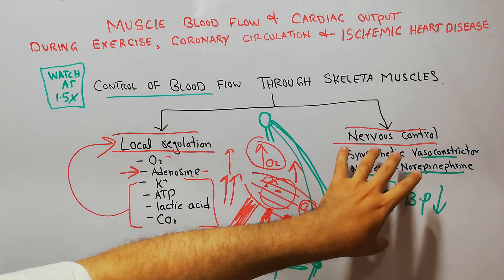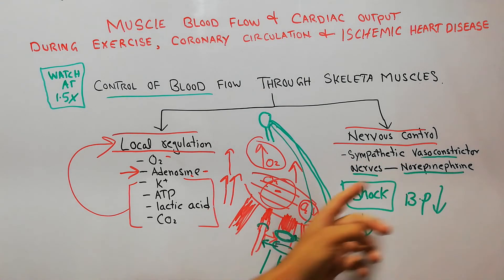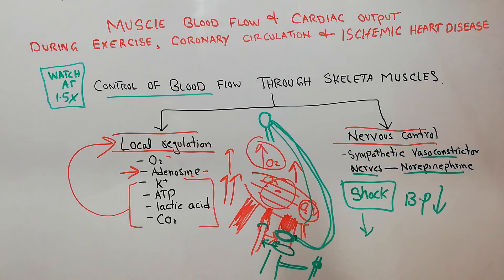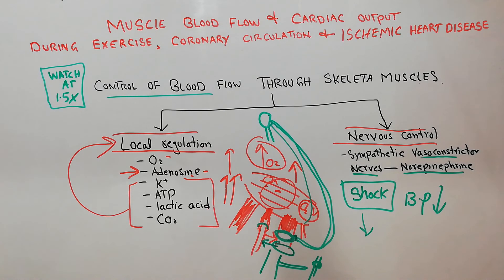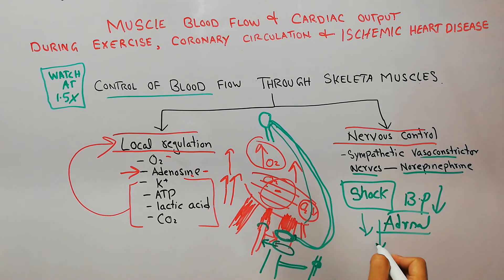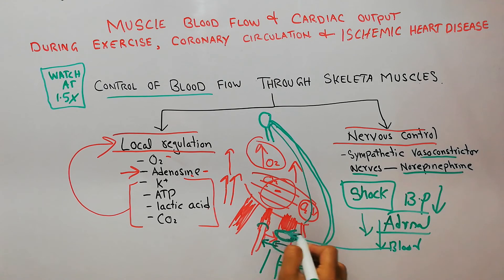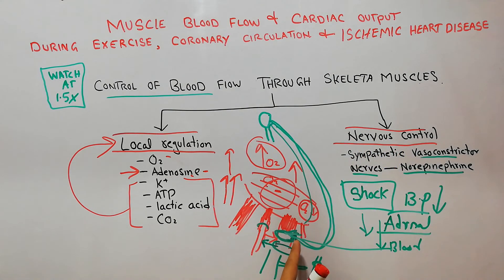The nervous control of blood flow through skeletal muscles is carried out by sympathetic vasoconstrictor nerves. These nerves secrete norepinephrine and are mostly active during shock, constricting blood flow to muscles where it is not needed and diverting more blood towards the brain. Norepinephrine is also secreted from the adrenal glands, where it goes directly into the blood and acts on the blood vessels. Through the nervous system, norepinephrine is secreted at the nerve endings to constrict blood vessels during shock.